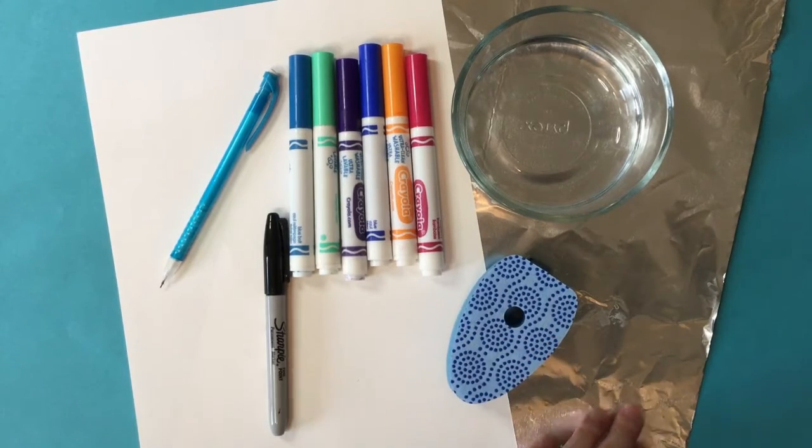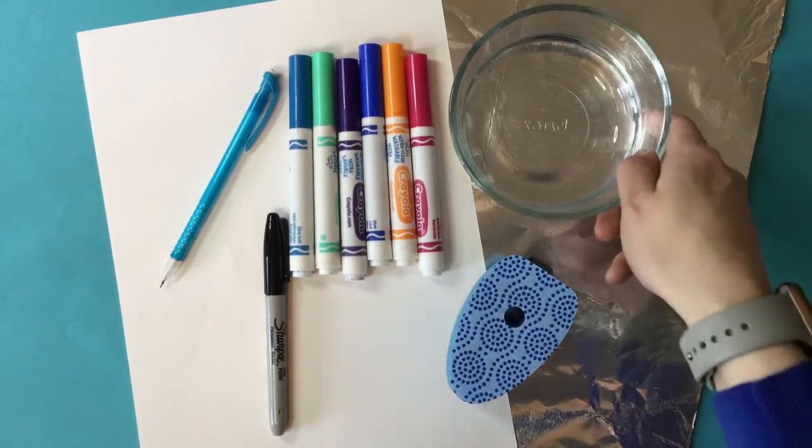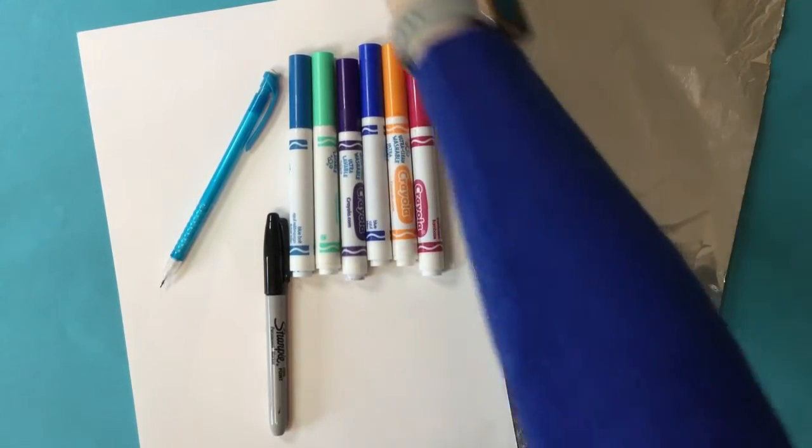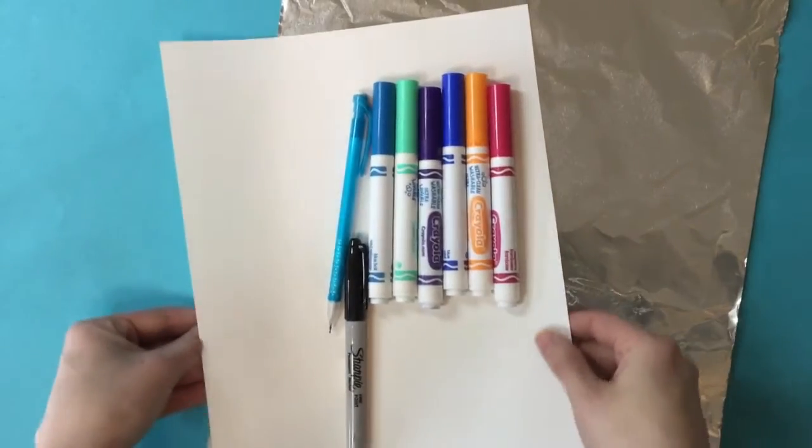You're also going to need some foil. And if you are using a spray bottle then you don't need the bowl of water or the sponge, you can just use the spray bottle of water.